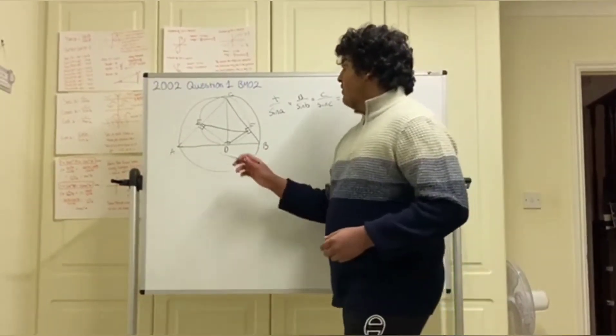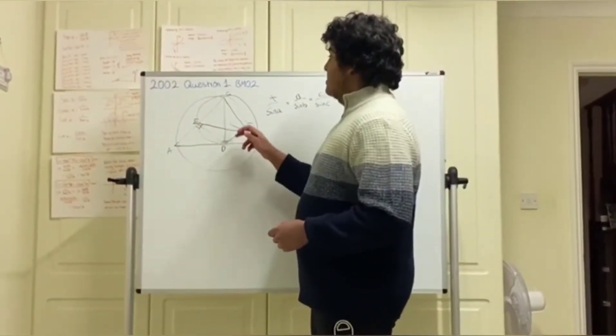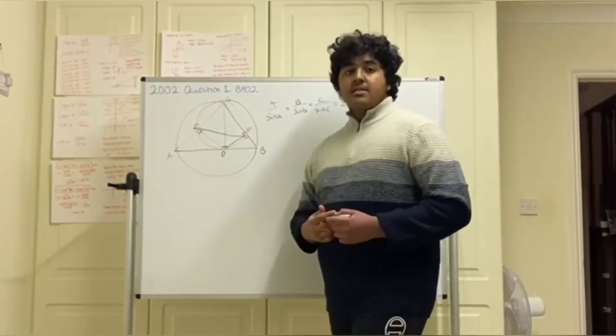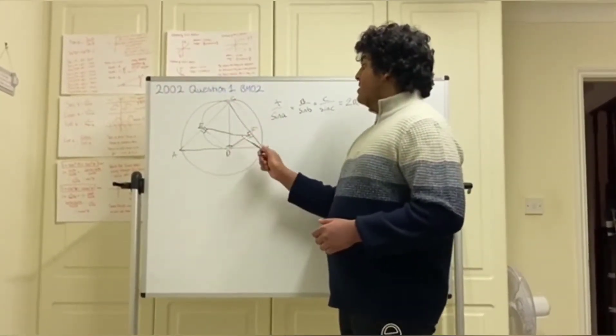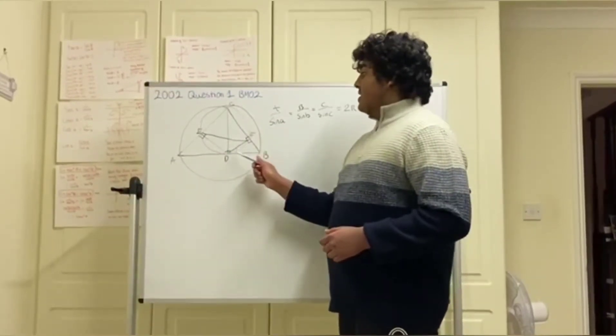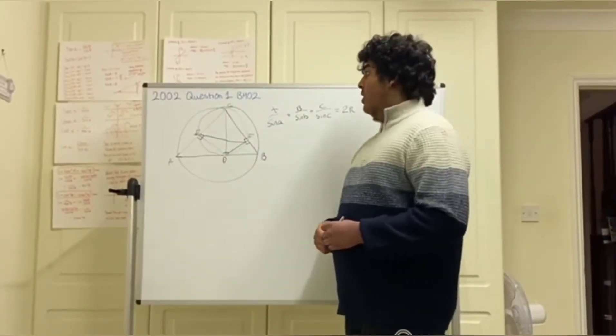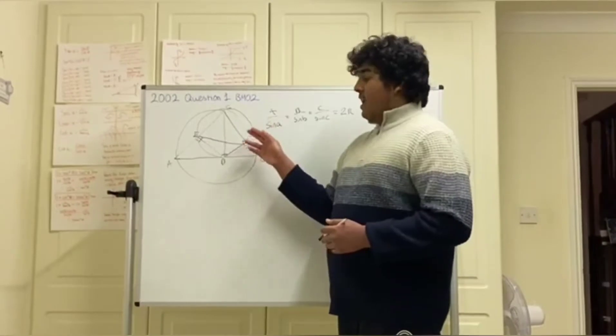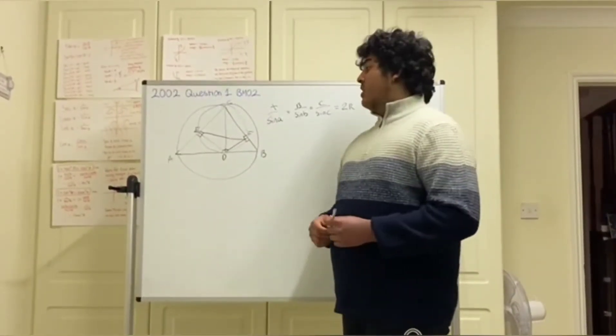So we've got the length EF here. Since we know that CD is in fact the diameter of circle CEDF, we know that CEDF is a cyclic quadrilateral, as in CDEF all lie on the same circle.